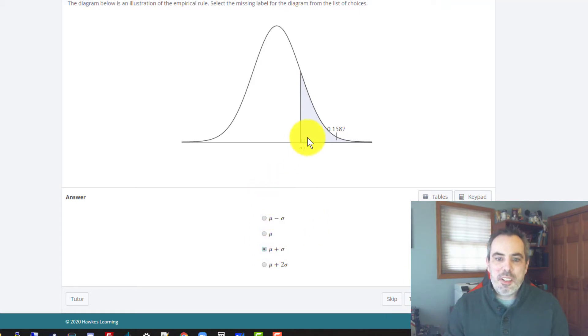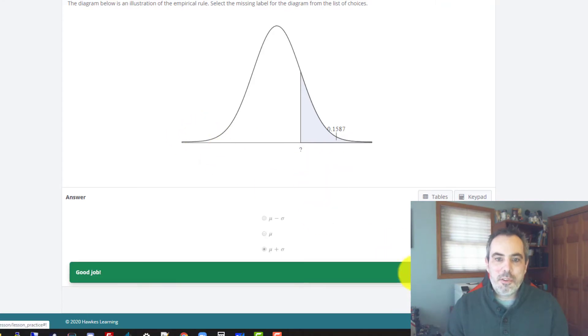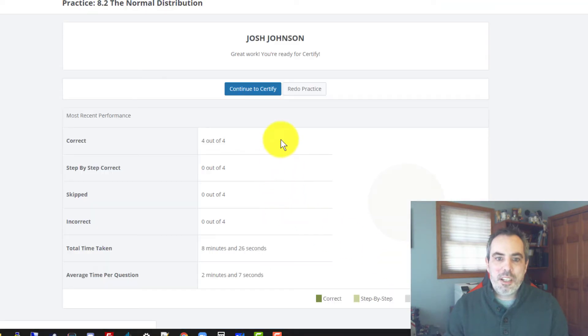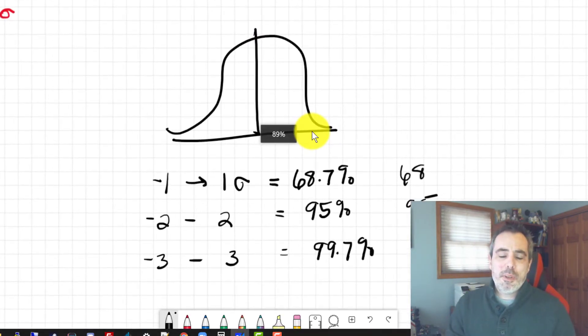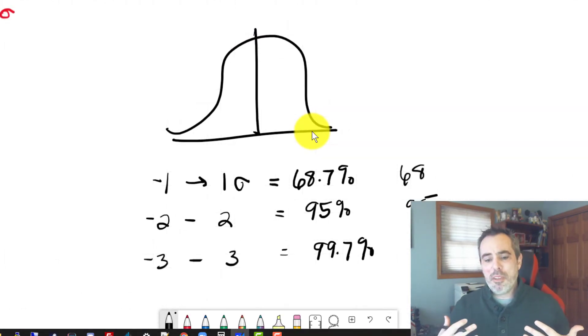You can kind of visually see that two standard deviations and three especially get really way out onto the wings there. But that's all they're looking for is what is the standard deviation that is being used here. So that's the initial talk for 8.1 and 8.2 about the uniform and normal distribution. I'm going to put together another video for 8.3 specifically, which talks about that normal distribution in a little bit more depth.